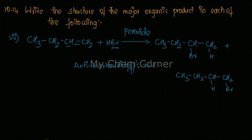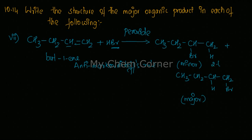Remember, in anti-Markovnikov's rule, the adding ion — that is your Br minus — will bond to that carbon that contains the most number of hydrogen atoms in the double bond. That is going to be the major product, and the other compound will be the minor product. This compound is but-1-ene, or just butene, and this compound is going to be called 2-bromobutane. And this is 1-bromobutane.